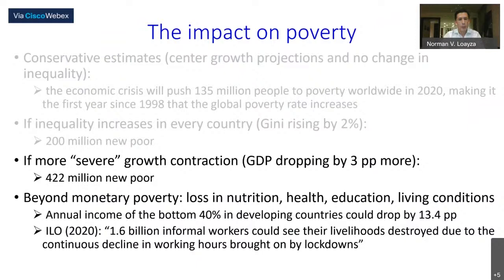If a more severe growth contraction materializes — that is, GDP dropping by three percentage points more — the number of new poor will rise to 422 million. This is more or less equivalent to the population of the whole of South America.